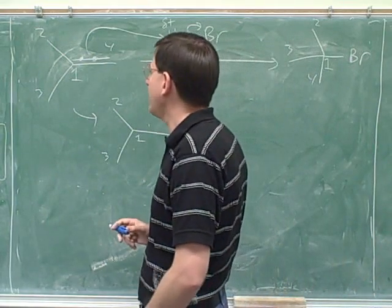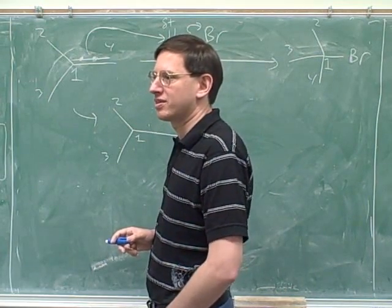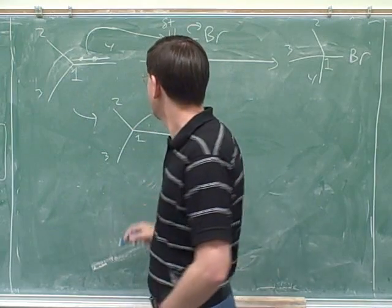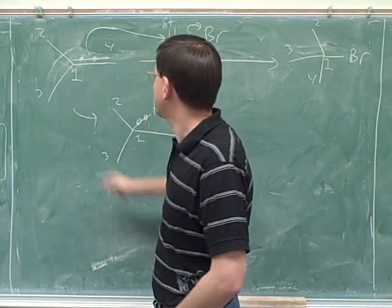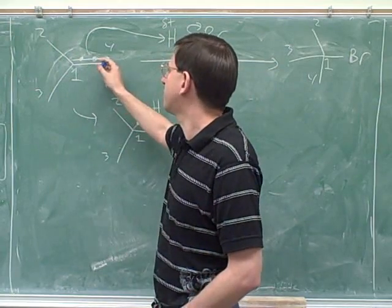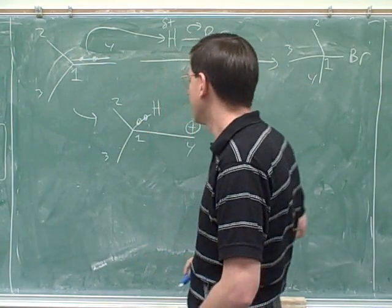Well, whoever bonds to the hydrogen, the other one will get the positive charge, right? So, for example, if the hydrogen ends up over here, that happened because the number one took these electrons and bonded with the hydrogen. Well, that would mean the number four lost the electrons. So it would have to end up positive.